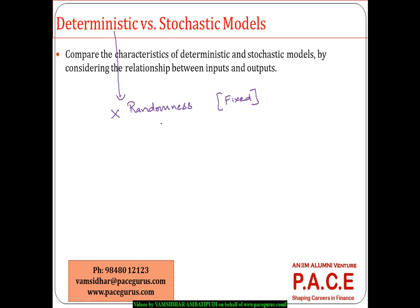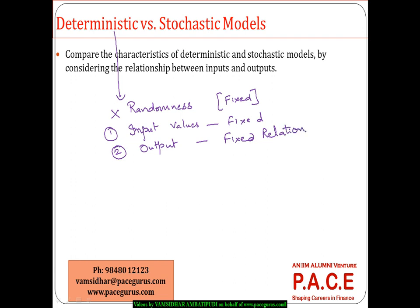Once the inputs are fixed, the first point about a deterministic model is that the input values are really fixed. Because the input values are fixed, when computing the output, only that set of input values and that set of fixed relationships between the various input variables are considered. The values of the input variables, as well as the relationships between them, are all fixed in a deterministic model.